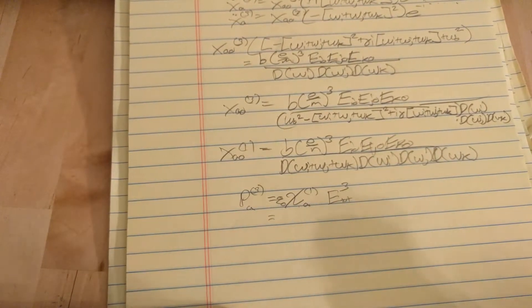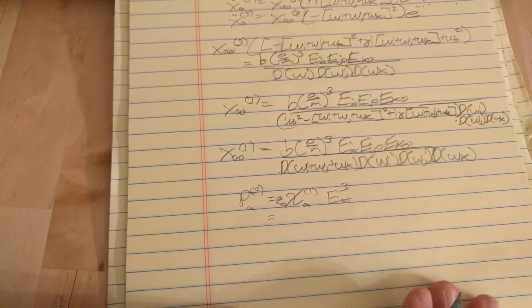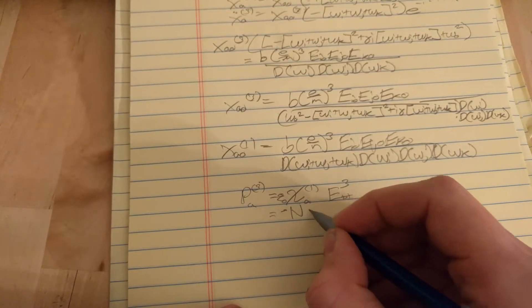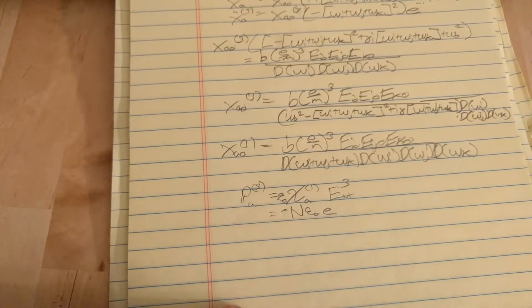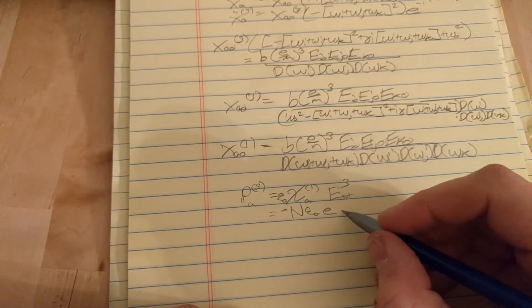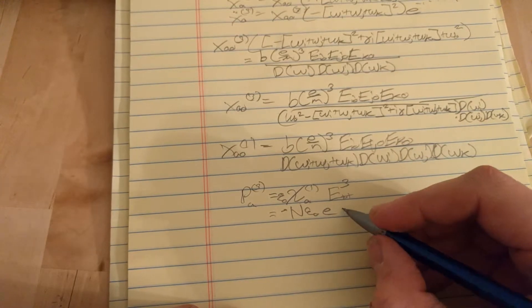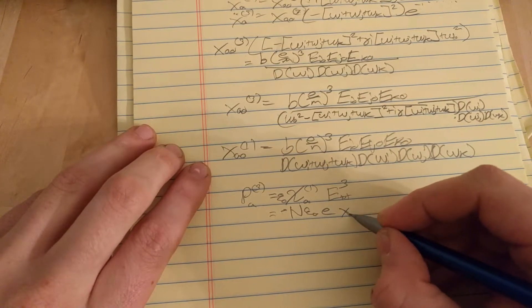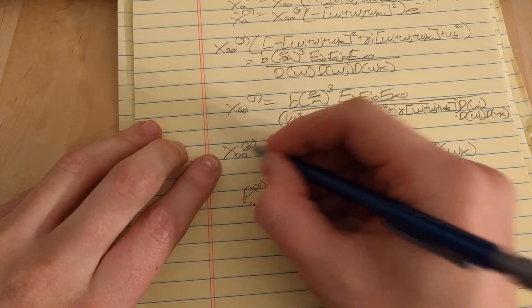Okay, but that's also equal because the polarization is the dipole moment per unit volume is equal to negative n epsilon naught times the electric charge times each x here. Oh, sorry, this should be a 3.